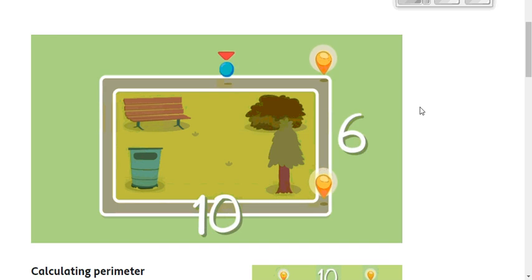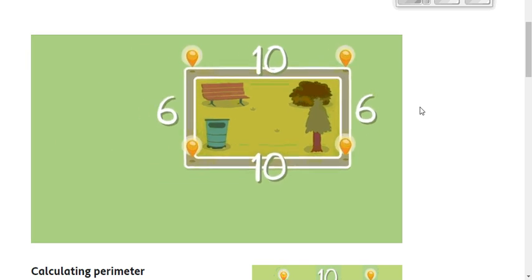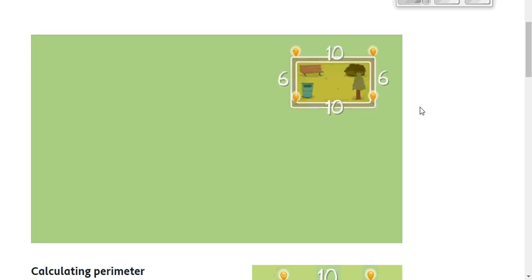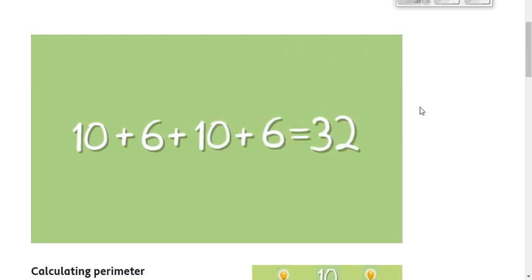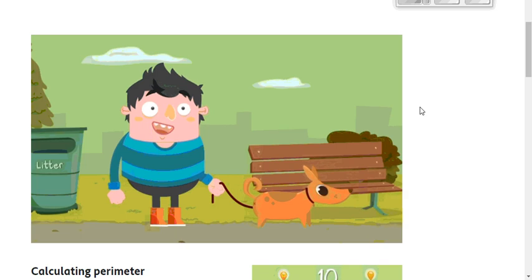Now do the next side. 10 steps again. And now back to where you started? 6. So how far is it to go all the way around? All we need to do is add the numbers from each of the sides together and then we know how far it is all the way around. So, 10 plus 6 plus 10 plus 6 equals 32. You'll walk for 32 steps if you go all the way around.